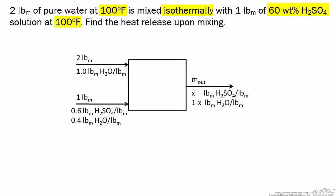When we say it's being mixed isothermally, we know that the inputs are at 100 degrees Fahrenheit. Isothermal means constant temperature, so the outlet is also at 100 degrees Fahrenheit. Mixing of H₂SO₄ with water is an exothermic process, so if we're keeping the temperature constant, that means heat is released. We're trying to find how much heat is released for this particular process.